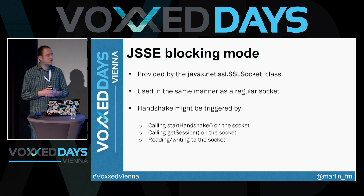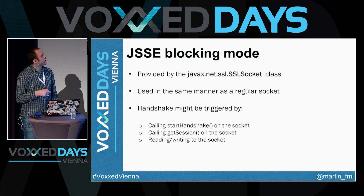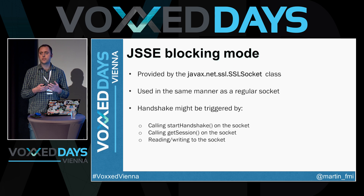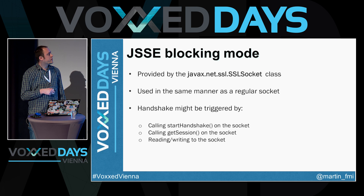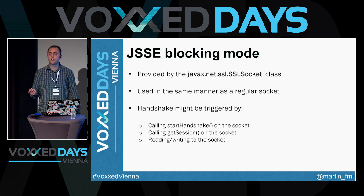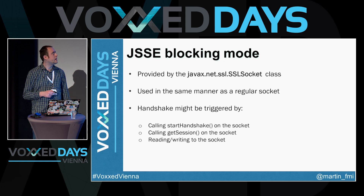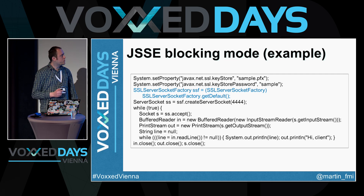The blocking mode of operation is provided by the SSL socket class, used in the same manner as a regular socket. The TLS handshake can be triggered in three ways: explicitly calling start handshake on the socket; trying to get the session from the socket, which triggers the handshake if it hasn't been initiated; or by trying to read or write to the SSL socket. These are the three ways the socket API triggers the TLS handshake behind the scenes.